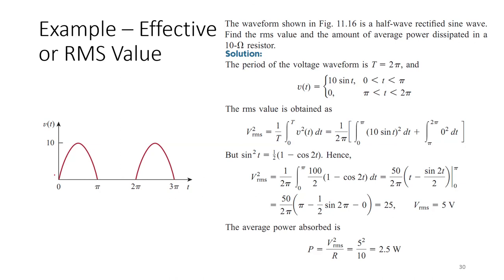For a half-wave rectified sinusoidal waveform, v(t) = 10·sin(t) from 0 to π, and 0 from π to 2π. Applying the RMS formula and integrating gives the RMS value. The average power absorbed by a 10 Ω resistor is VRMS²/R, which equals 2.5 W.